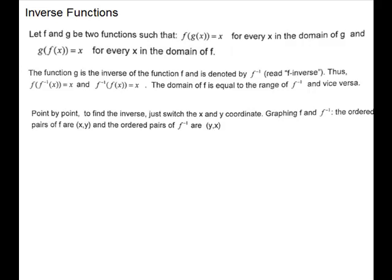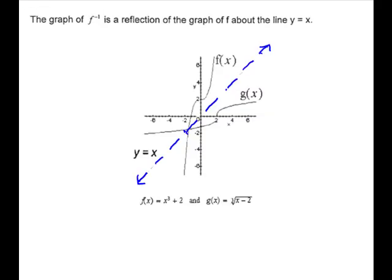Graphing f and f inverse: the ordered pairs of f are (x, y), and the ordered pairs of f inverse are (y, x). So your domain and your range have just switched. Here's a picture of inverse functions. The graph of f inverse is a reflection of the graph of f about the line y equals x. So y equals x is the line that goes through (0, 0), and it just flips across there.